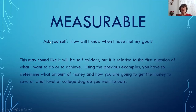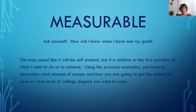Measurable — ask yourself: how will I know when I have met my goal? It may sound intuitive or self-evident, like you'll know when you get there, but it is relative to the first question of what you want to do or achieve. Using the previous example, you have to determine what amount of money and how you're going to get the money to save, or what level of college degree you want to earn.